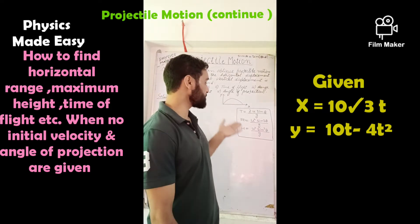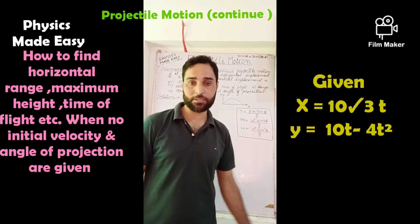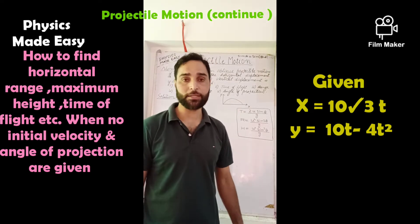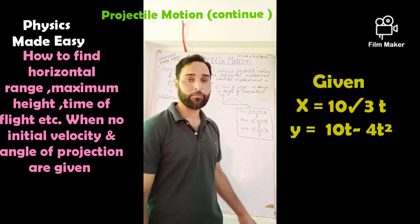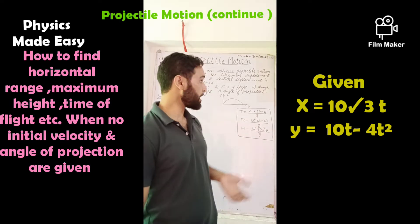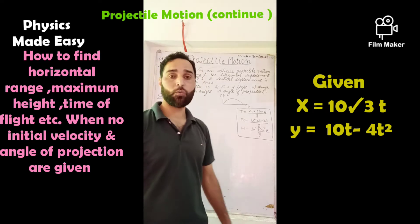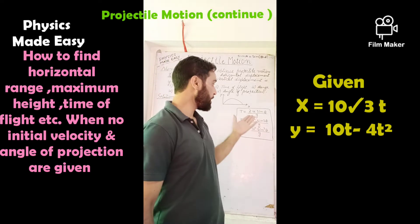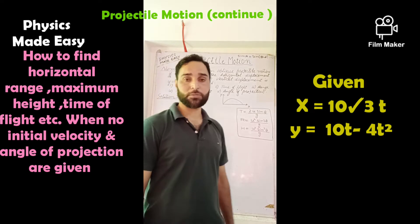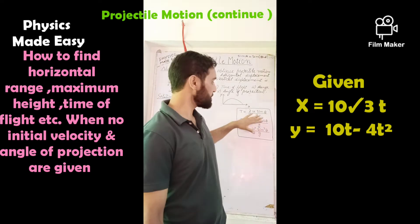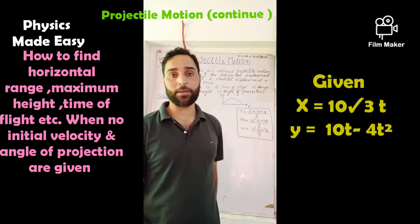This time we are not given the initial velocity or angle of projection. All these quantities — horizontal range, maximum height, time of flight — involve the initial velocity and angle of projection. Since we do not know the values of u and θ, we cannot use the standard equations directly, so they are of no use this time.